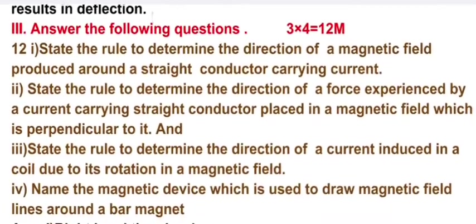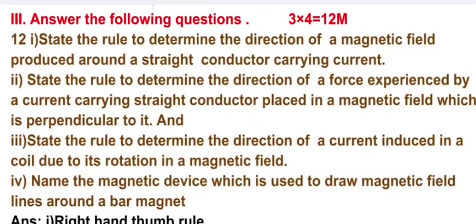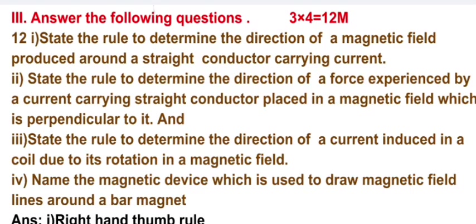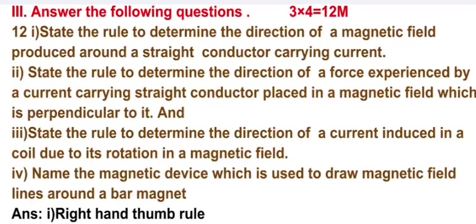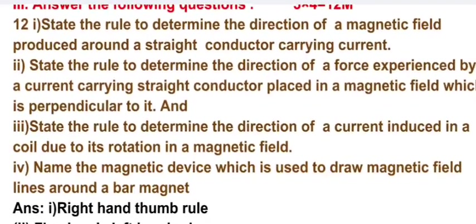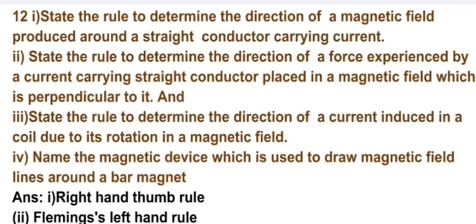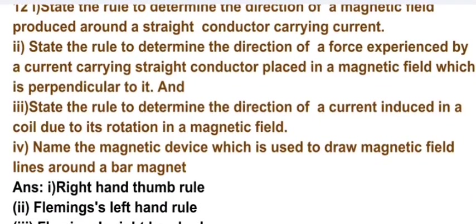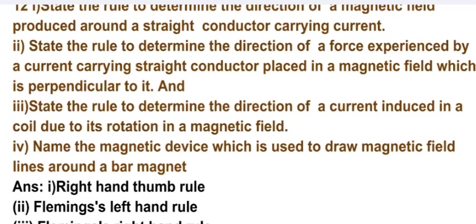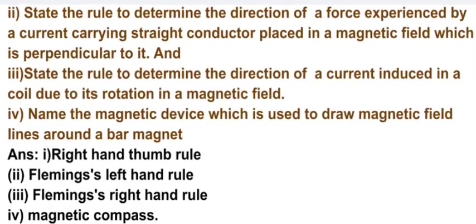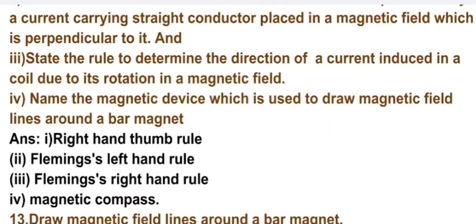Number three, answer the following questions: 3 into 4 equals 12 marks. State the rule to determine the direction of a magnetic field produced around a straight conductor carrying current. State the rule to determine the direction of a force experienced by a current carrying straight conductor placed in a magnetic field which is perpendicular to it. And three, state the rule to determine the direction of a current induced in a coil due to its rotation in a magnetic field.